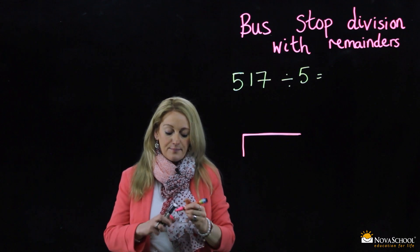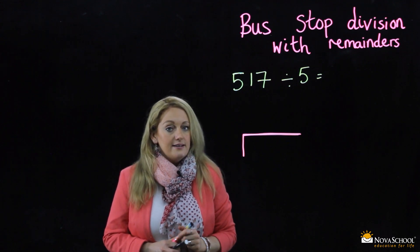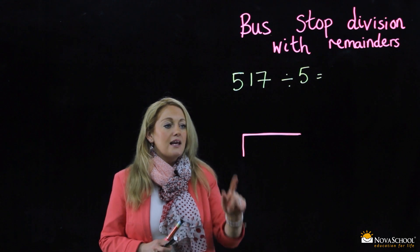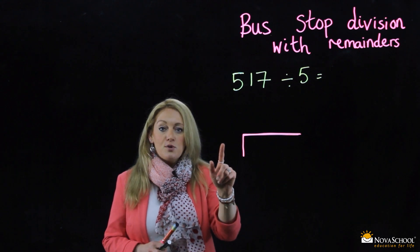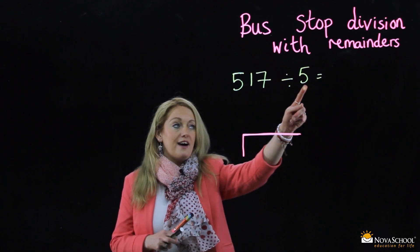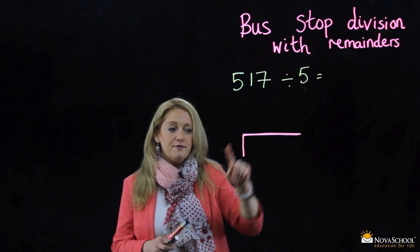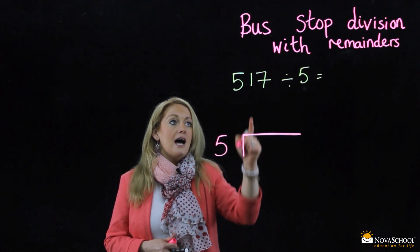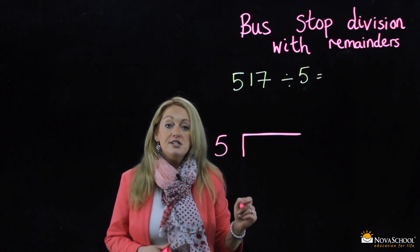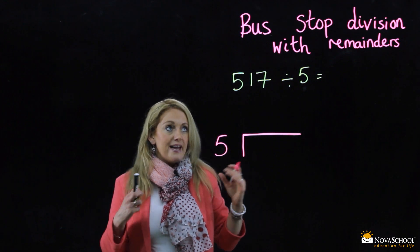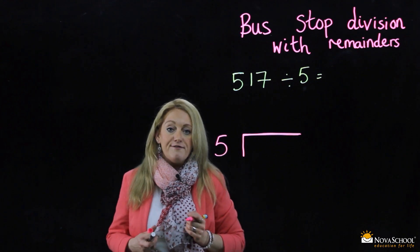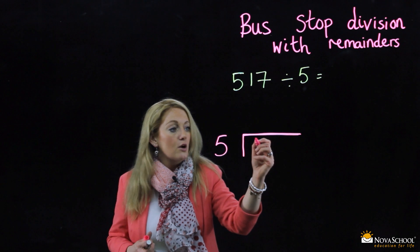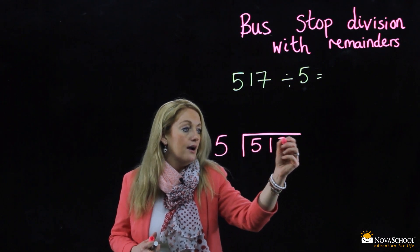Nice and easy. Where do we put the digits? Let's see if we remember. The five goes outside the box — we are dividing by five and the five sits here. I'll place it in for you. And the five hundred and seventeen, which is the big number that we are finding the answer for, the division question, goes inside the box.